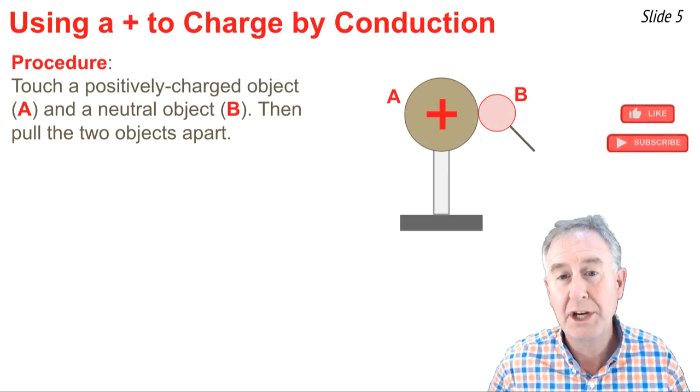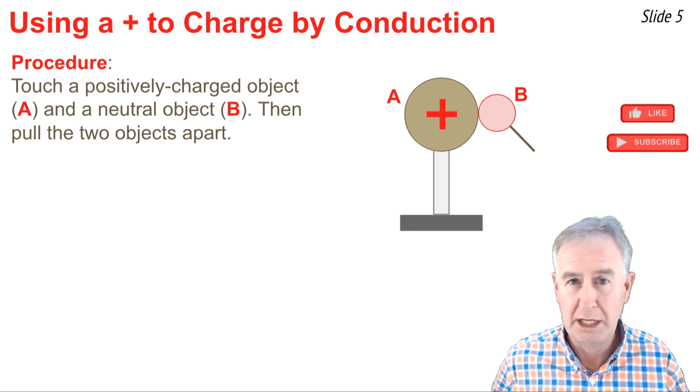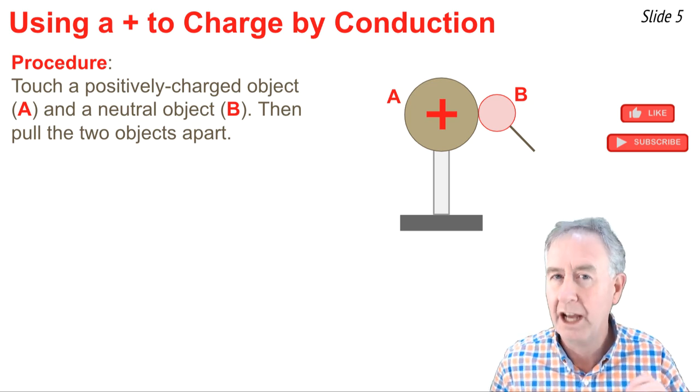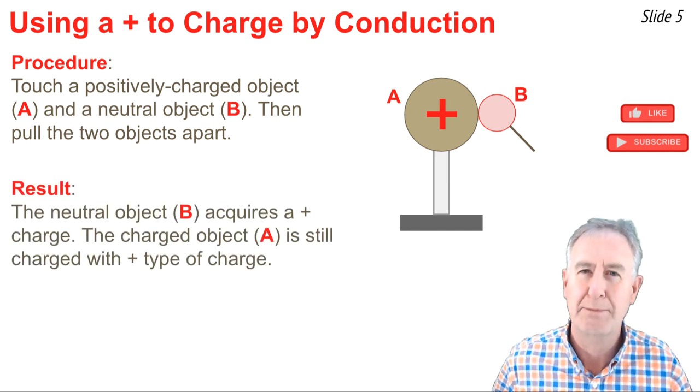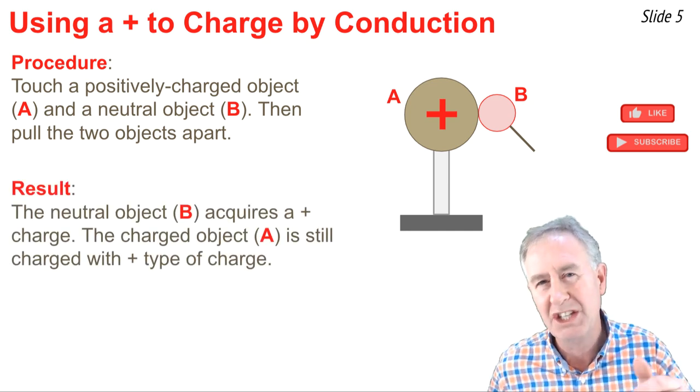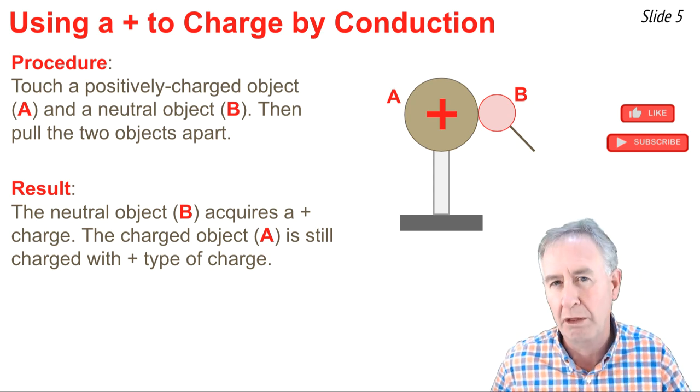Now, let's suppose that object A is charged positively, and we use it to charge object B, the neutral object. And when contact is made and object A and B are pulled apart, we learn that object B now acquires a positive charge. Object A still has the same type of charge, positive, but it's less charged than before the process happens.